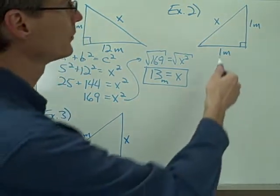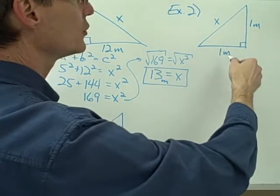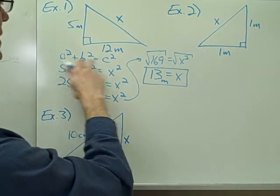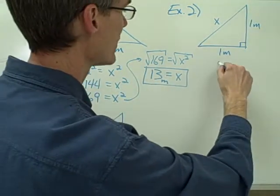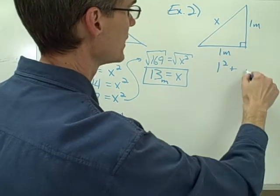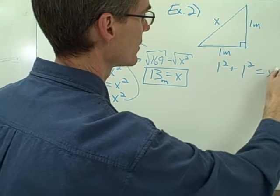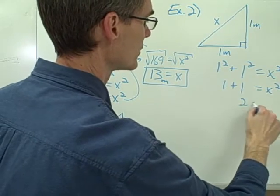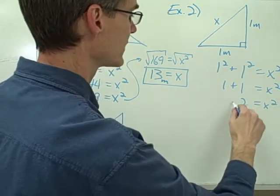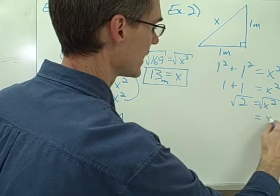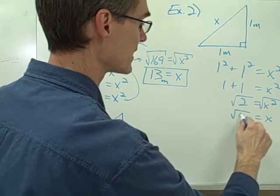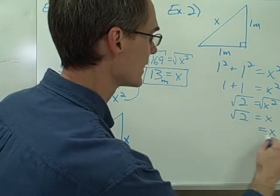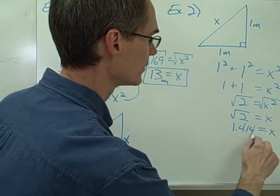Example number two: Again I have a right triangle and I know the lengths of two legs. I set up my equation: one squared plus one squared equals X squared. One squared is one, one squared is one, so one plus one is two, giving two equals X squared. I take the square root of each side and X equals the square root of two, or approximately 1.414.